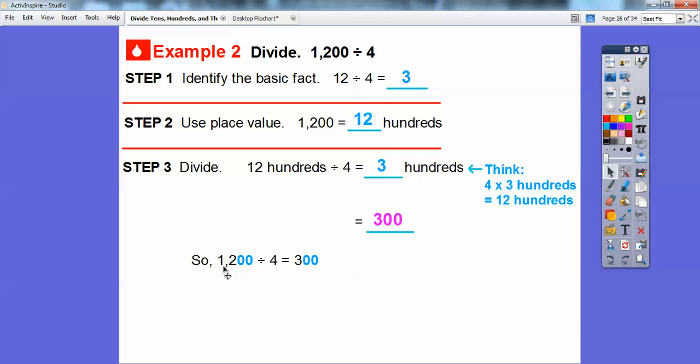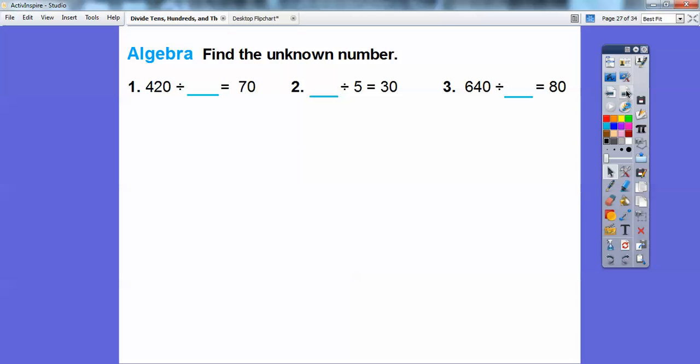So 1,200 divided by 4 is 300. Again, I like to think of it like this: 12 divided by 4 equals 3, and since this has two 0s, we end it with two 0s, so it's 300.